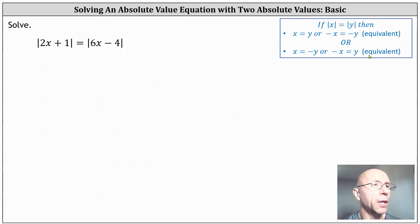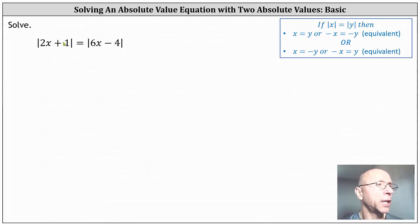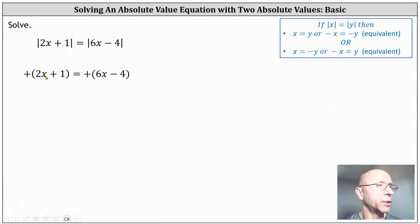This indicates that in order to solve the absolute value equation, we only have to set up and solve two equations — one from the first bullet and one from the second bullet. For the first equation, let's leave the expressions inside the absolute value as positive and set them equal to each other. If we took the opposite of both expressions and set them equal to each other, the equation would be equivalent.